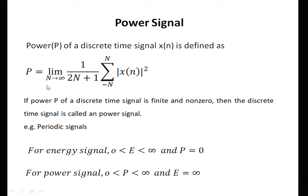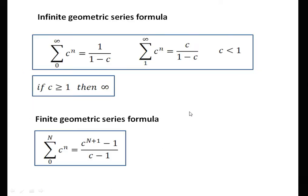Power — this is the formula for power. The average power of the signal is finite and non-zero generally for periodic signals. When the signal is periodic in nature and of indefinite length, we calculate the power for that signal. This is very important. For an energy signal, power must be zero and energy should be finite. For a power signal, energy is infinity and power is finite. These are the infinite and finite geometric series formulas which we require to use while solving problems.